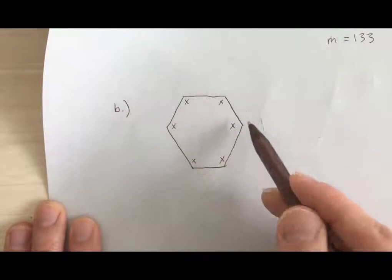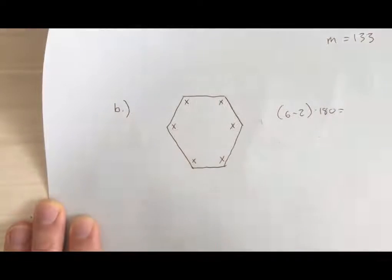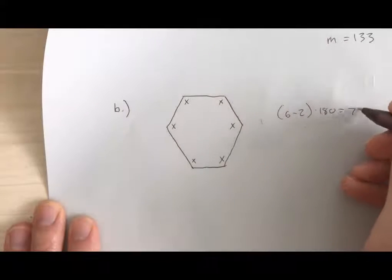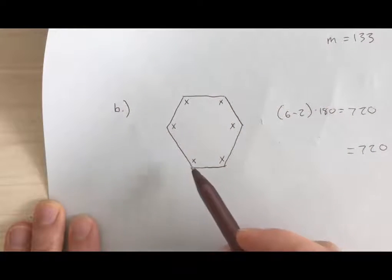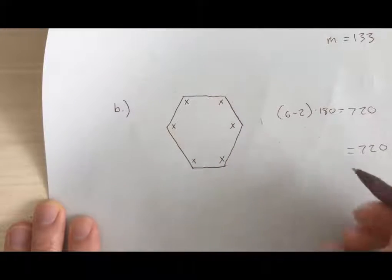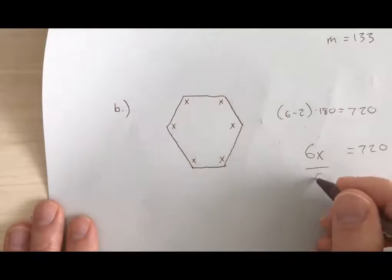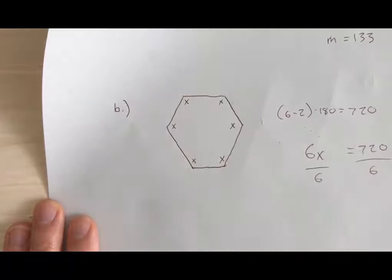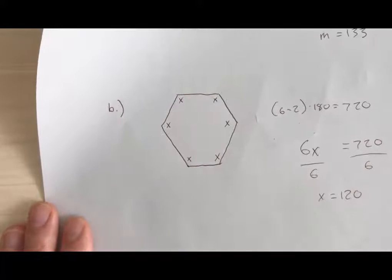Let's count: one, two, three, four, five, six. So 6 minus 2 times 180 is going to give me the sum of those angles. In this case, that's going to be 4 times 180, which is 720. So this is going to equal 720, all those interior angles. I have one, two, three, four, five, six x's. So I could write x plus x plus x like six times, or I could just write 6x. Divide by 6, and that's going to give me 120.